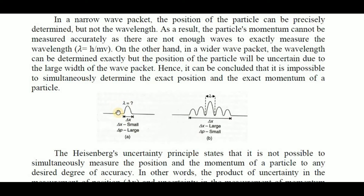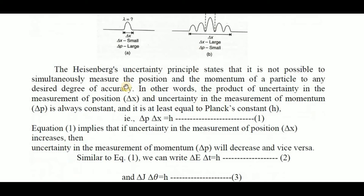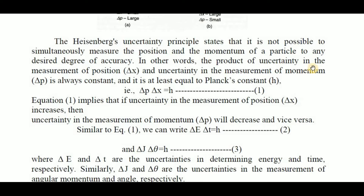The space is very small in a small wave packet, so we can locate the position of the particle easily. In a large wave packet, it is very difficult to locate the position of the particle, but we can measure the wavelength. The Heisenberg's uncertainty principle states that it is not possible to simultaneously measure the position and momentum of a particle to any desired degree of accuracy. The product of the uncertainty in position delta x and the uncertainty in momentum delta p is always constant and at least equal to Planck's constant h.